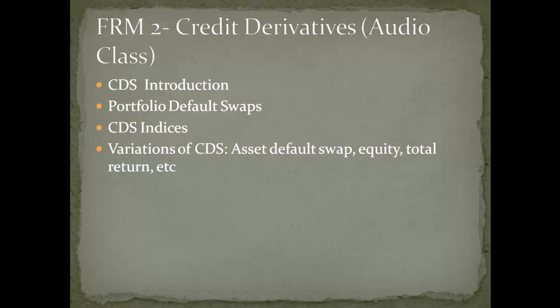Now moving to the fourth topic: variations of credit default swaps. These include asset default swap, equity default swap, total return swap, and credit linked notes. The asset default swap functions as a single name CDS when the underlying reference is an asset-backed security rather than a corporate reference. The market for ABS CDS has increased substantially. The equity default swap implies that the buyer is seeking protection on an equity security — equity cannot default by definition, but the swap provides compensation if the stock value falls below a level such as 70% of the current value, making it resemble a deep out-of-the-money put. Alternatively the payout could be binary, fixing a recovery rate at a pre-defined percentage.